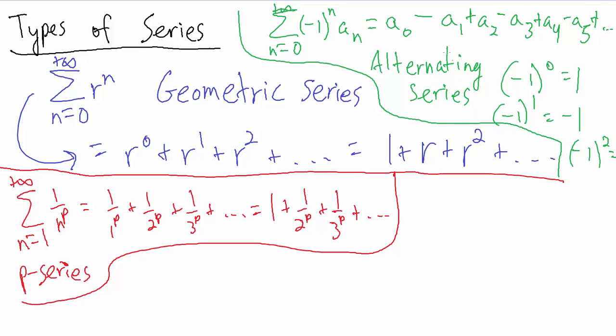So another type, the last type that we're going to list is called a power series, and that's something like this. Sum from n equals, let's say, 0 to positive infinity of a sub n times x to the n. So notice the difference here is we have x, which represents a variable in like a function. So this is a power series.